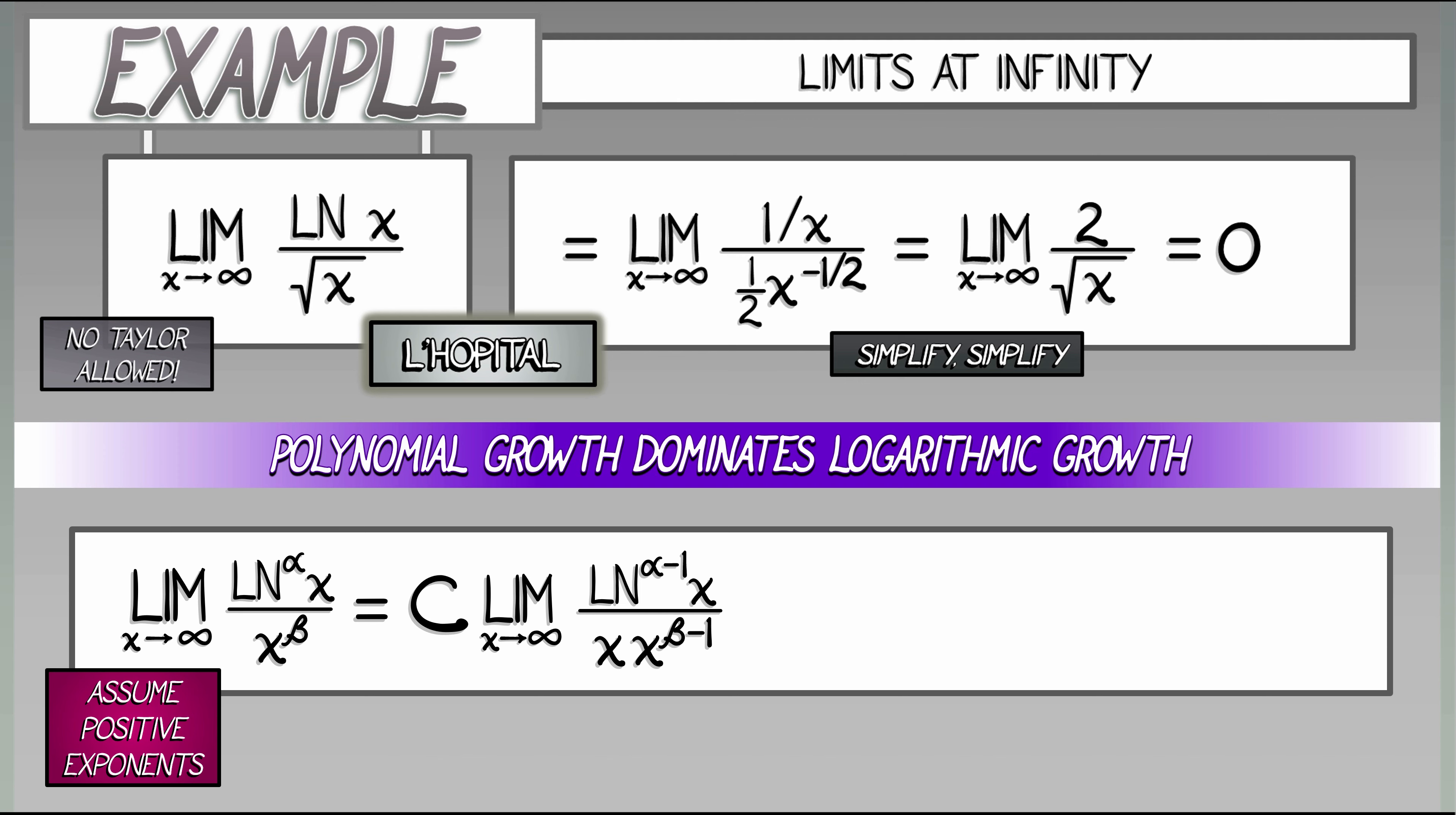And now we see there's a little bit of algebraic simplification that gives us, in the end, this constant c times the limit as x goes to infinity of the ratio between log of x to the alpha minus 1 and x to the beta. So, the denominator remains the same. The numerator has decreased its power by 1. And so, using the same inductive argument as before, we keep going, we keep applying L'Hopital's rule,